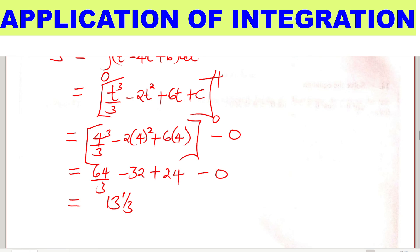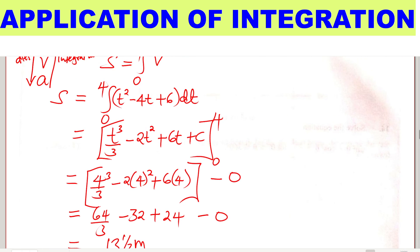That will be 13 and a third. And since this one is distance, it will be meters. So that is how you're supposed to find the distance.